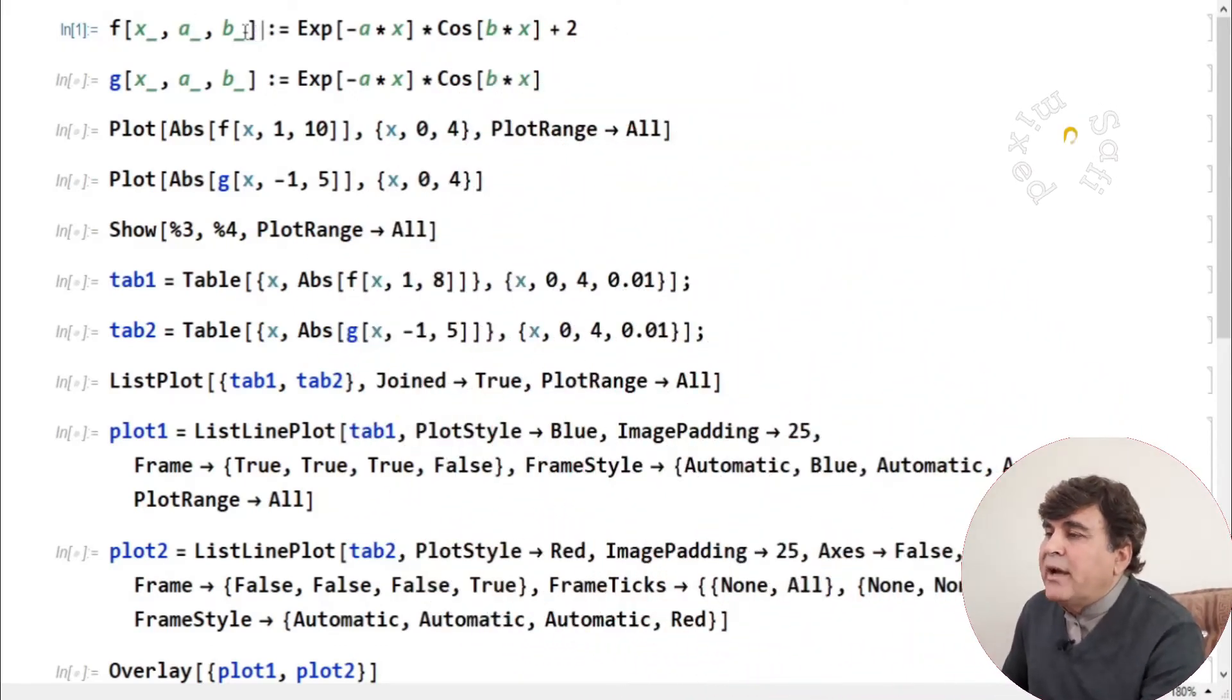Here I have two functions, one I am denoting by F and the other by G, and both depend on the same variable x. They are exponentially decaying and sinusoidally varying functions, and there is a difference of a constant which is 2 in the two functions. I want to first plot the absolute value of F function and the absolute value of G function separately.